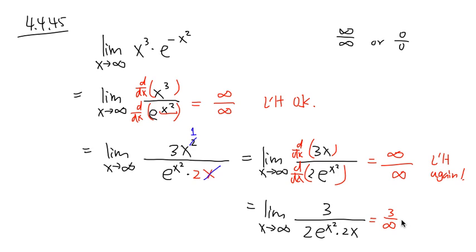Now look at what we have: on the top it's just the finite number 3. On the bottom, plugging in infinity gives e to the infinity times 2 times infinity — just a huge infinity. So this is 3 over infinity, and we can draw the conclusion: the limit is 0. This is also the answer for the original limit.